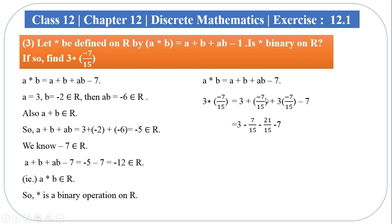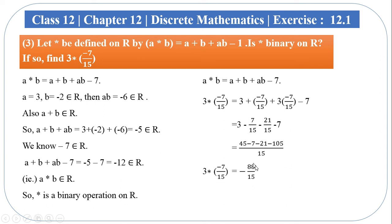So b equals minus 7 divided by 15. So 3 plus minus 7 divided by 15, then 3 times minus 7 divided by 15 gives minus 21 divided by 15, minus 7. Taking the common denominator of 15: the numerator becomes 45 minus 7 minus 21. That gives 45 minus 7 minus 21, which equals 17 minus 7, so on further simplification the answer is minus 88 divided by 15. This is the result.